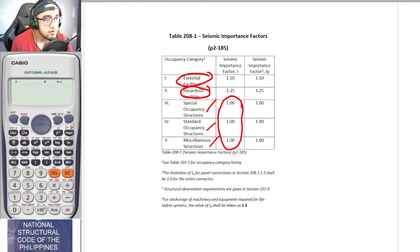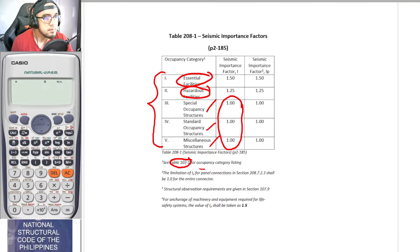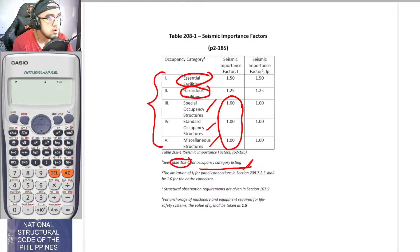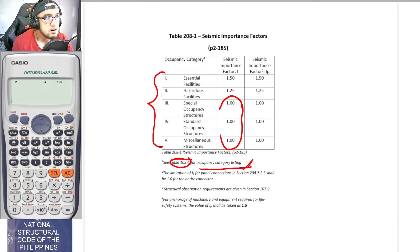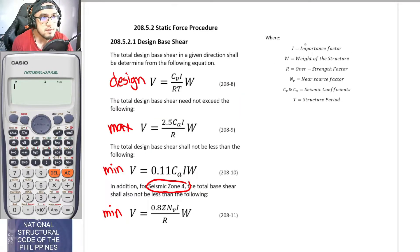To know what is included in each occupancy category, refer to table 103-1 for the occupancy category listing. That table tells you which occupancy category a structure falls under.